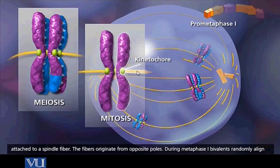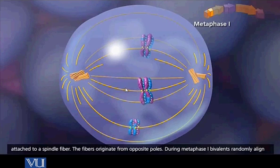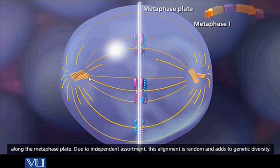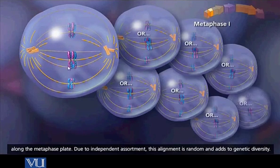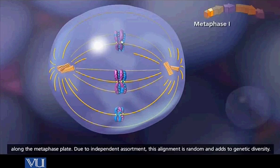In mitosis, both kinetochores of sister chromatids are attached to different spindle fibers. In meiosis, both kinetochores of a sister chromatid are attached to the same centrosome fibers. This arrangement of chromosomes is random — for example, a red chromosome can go with a blue chromosome to either pole. This process is called independent assortment and it results in genetic diversity.